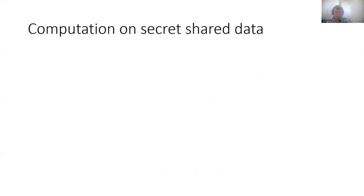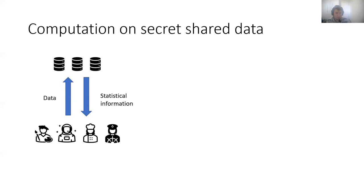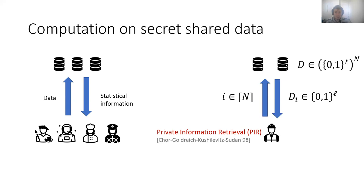Consider the following scenario of computation on secret shared data. Suppose we have clients and servers, and the clients upload their data in a secret shared manner to the servers. In return, they get some statistical information which depends on all of their inputs. Consider another scenario where there is some database D of records of length L bits, replicated among a group of servers, and the client wants to secretly recover the record D_i. This is known as private information retrieval, and an example could be privately viewing movies. Private information retrieval can also be cast in the HSS framework, if we view the database as the proof table of some function.